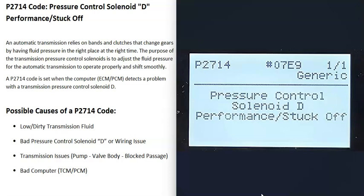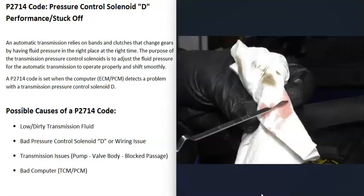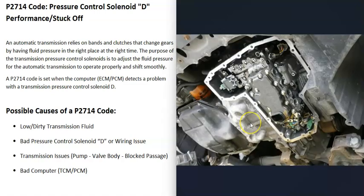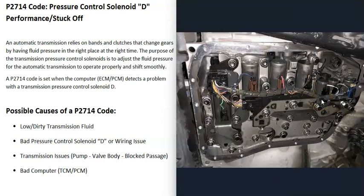The first possible cause of a P2714 code is low or really dirty transmission fluid. Check your transmission fluid and make sure it's at the right level. Some newer vehicles no longer have a dipstick, so you may not be able to check it. Low transmission fluid causes a lot of problems. Dirty fluid is also an issue — there's a filter inside the transmission that can get clogged, so if the fluid looks really dirty, consider replacing it along with the filter, especially if it's overdue for maintenance.